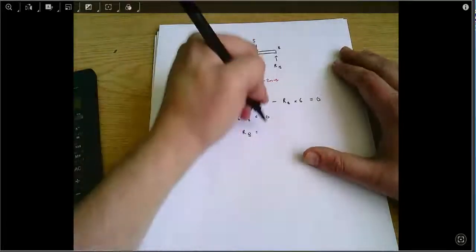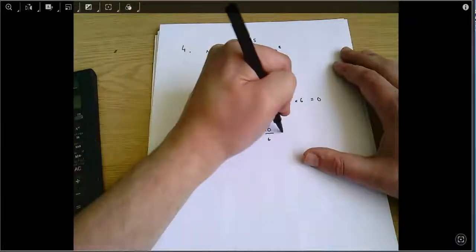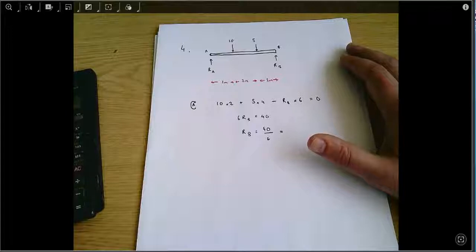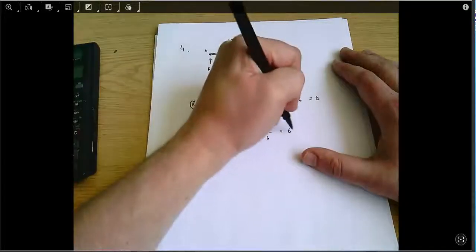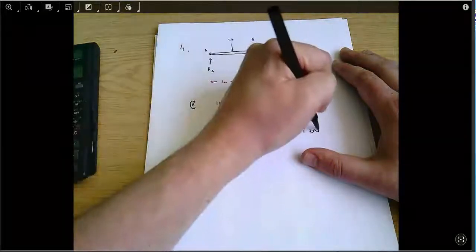40 divided by 6, which equals 6.67 kilonewtons, I'm gonna say.